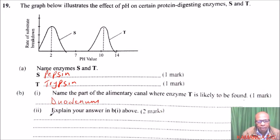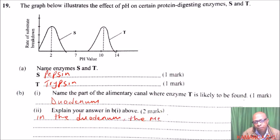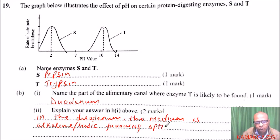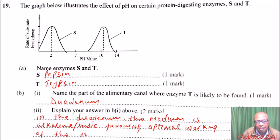In the duodenum, the medium is alkaline or basic. This provides the optimal working conditions for enzyme T, since trypsin operates best at an alkaline pH, which matches the environment of the duodenum.